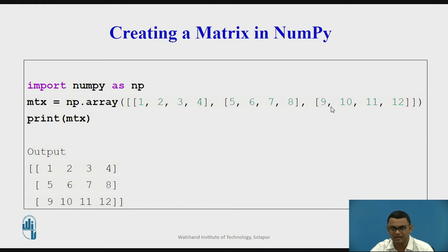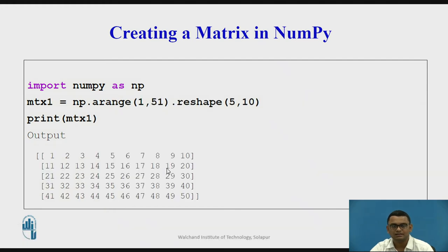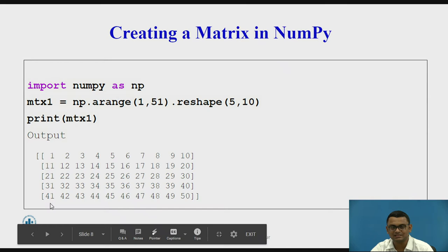Here I am passing three sub-arrays and the output is a two-dimensional matrix having three rows and four columns. A matrix can also be created using a range function and then reshaping it — for example, when you want data in the range from 1 to 50 and want to reshape the matrix to have five rows and ten columns, you can use the reshape module as shown in the slide.